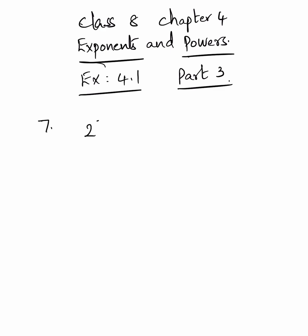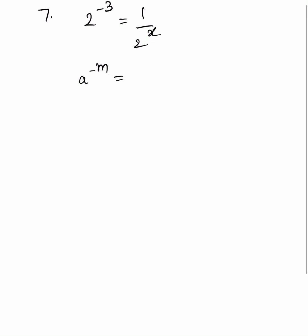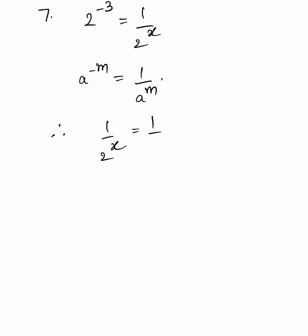Find x if 2 to the power of minus 3 equals 1 by 2 to the power x. We know that a to the power of minus m equals 1 by a to the power of m. Therefore, 1 by 2 to the power of x equals 1 by 2 cube, which implies 2 to the power of x equals 2 cube. So x equals 3.